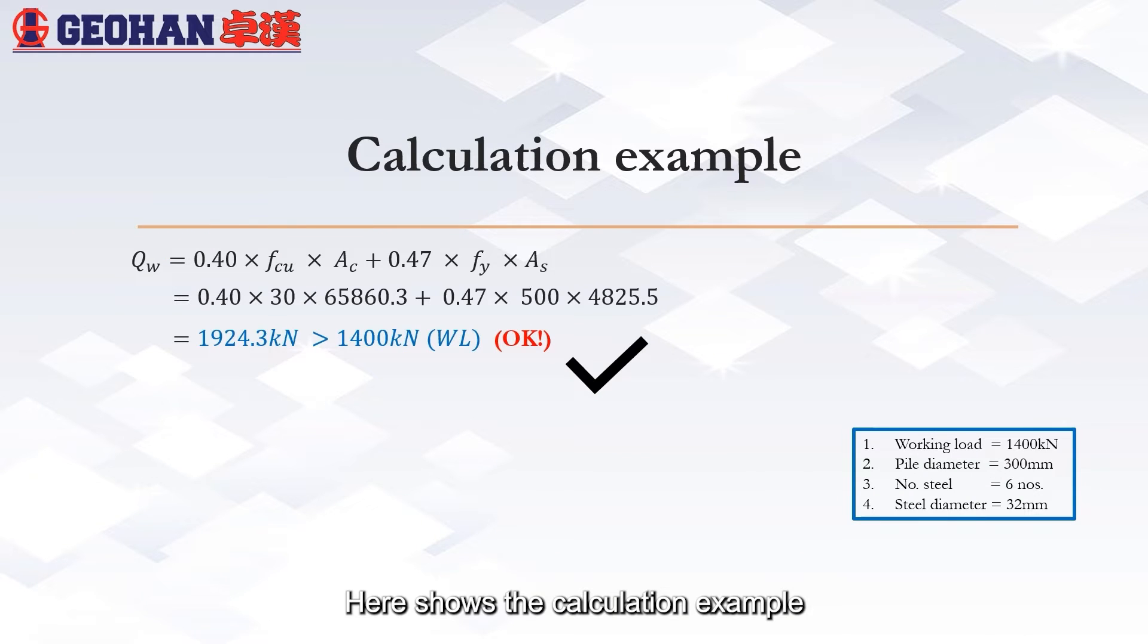Here shows the calculation example. It is given that the working load is 1400 kN. Six steel bars with 32 mm diameter is adopted in 300 mm diameter MicroPile. As the structural capacity is higher than working load, it is said to be passed.